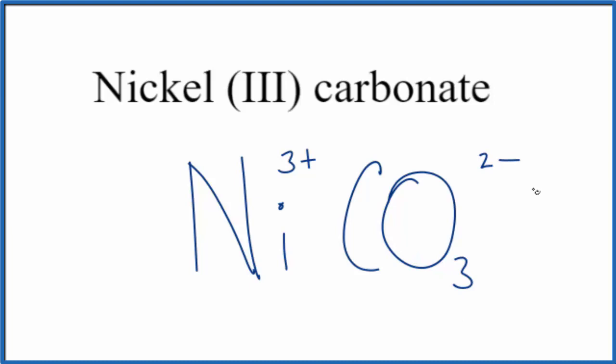So we need these charges to add up to zero. Nickel-3 carbonate is a neutral compound. It doesn't say ion after it. So to do that, we'll use the crisscross method.